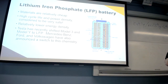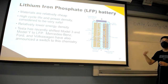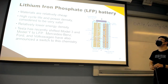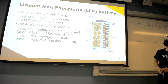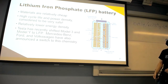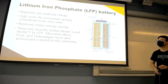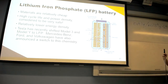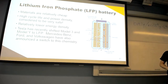Lithium iron phosphate (LFP) is the chemistry Tesla has been migrating toward. Materials are relatively cheap — no rare earth metals like cobalt. It has high cycle life, high power density, and is considered quite safe. The trade-off is relatively lower energy density, which means you might expect a somewhat lower range from this chemistry compared to NCA or NMC.